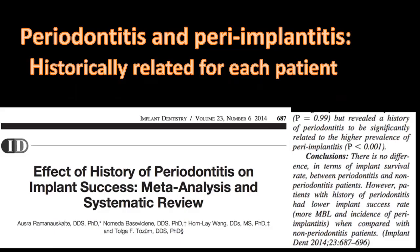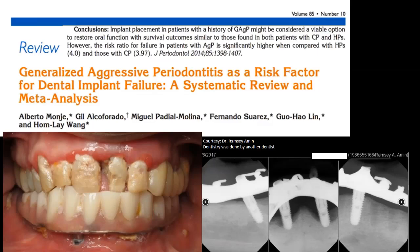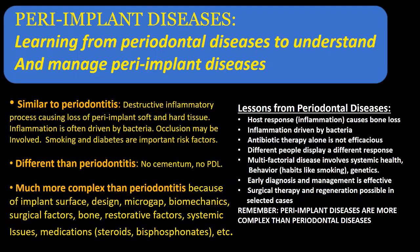I like to emphasize the commonality of periodontitis and peri-implantitis and show that historically they are very related. Inflammation drives both scenarios. If a patient had periodontitis in the past, they are more at risk of developing peri-implantitis. If the history was aggressive periodontitis, the risk is even greater. Lessons from managing periodontal disease can help us better manage peri-implant disease.